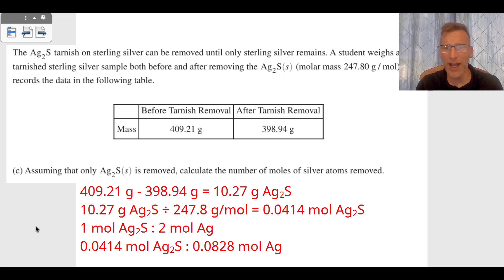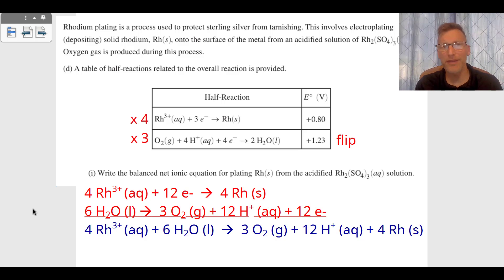And then they give us before the tarnish removal, after the tarnish removal. You can see it was 409.21 grams before, 398.94 grams after. What are we going to do? We're going to subtract these. That gives us 10.27 grams of the Ag₂S that has been removed. What do we do with grams? We divide by molar mass. We add up the molar mass to 247.8, and we get 0.0414 moles of Ag₂S. And then we have to look out for a molar ratio here at the end, because they didn't just want the moles of the silver sulfide, they wanted the moles of just the silver. So for every one Ag₂S, we have two moles of silver, so therefore we have 0.0828 moles of the silver.